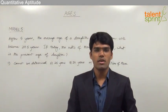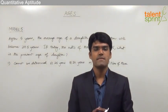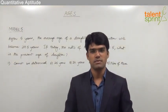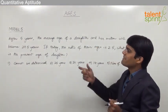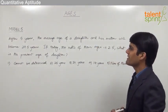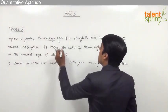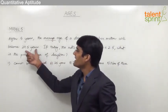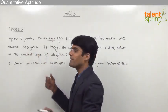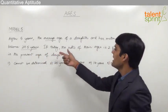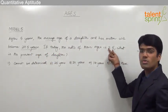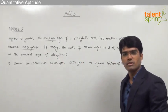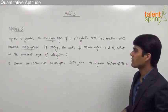Let us now take another model from ages which is based on the concept of averages and ratios. The question here is: after five years, the average age of a daughter and her mother will become 29.5 years. If today the ratio of their ages is 2 is to 5, what is the present age of the daughter?